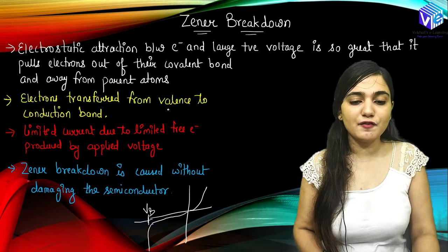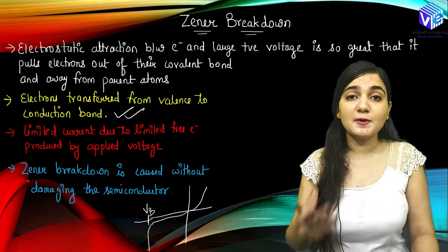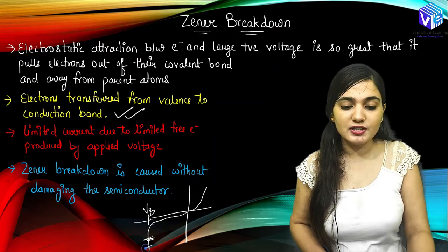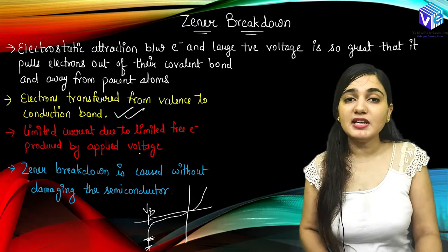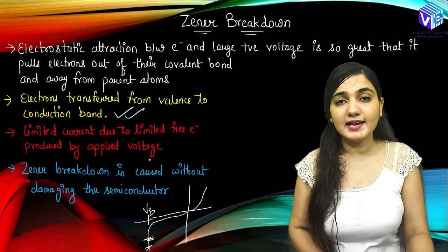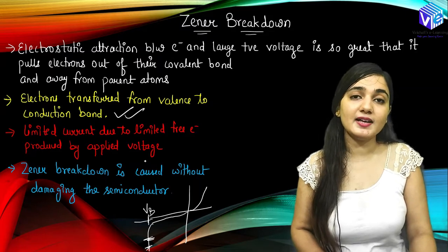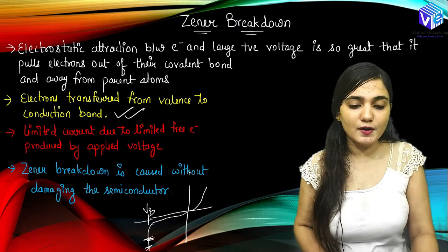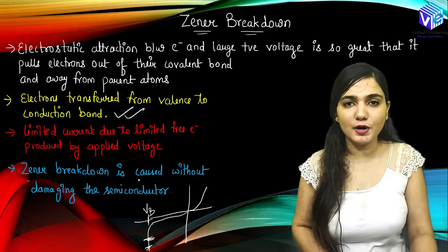So electrons are transferred from the valence to the conduction band. When more electrons are present in the conduction band, we will be having more flow of current. You can see after the breakdown region we will be having very high current. We know we have limited current with limited electrons, but after the breakdown, if we have unlimited electrons, we will be having unlimited current. So Zener breakdown is going to occur without damaging the semiconductor, because these electrons can always come back and make the covalent bond again.